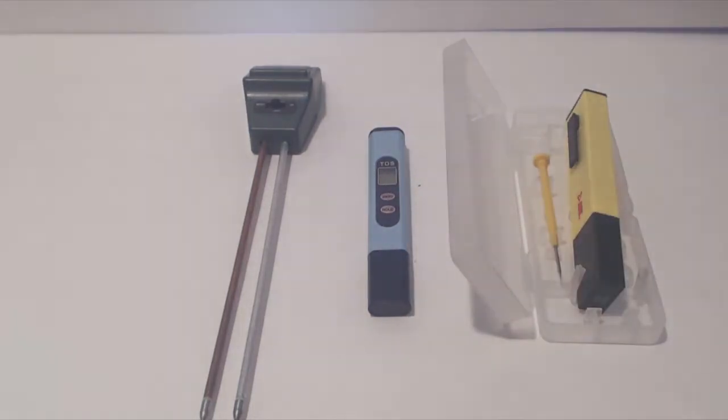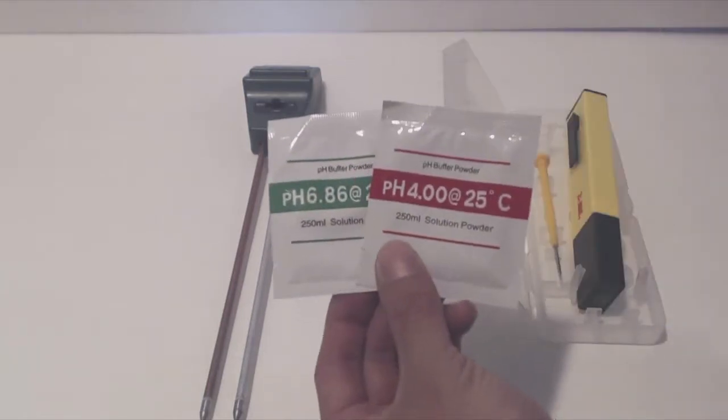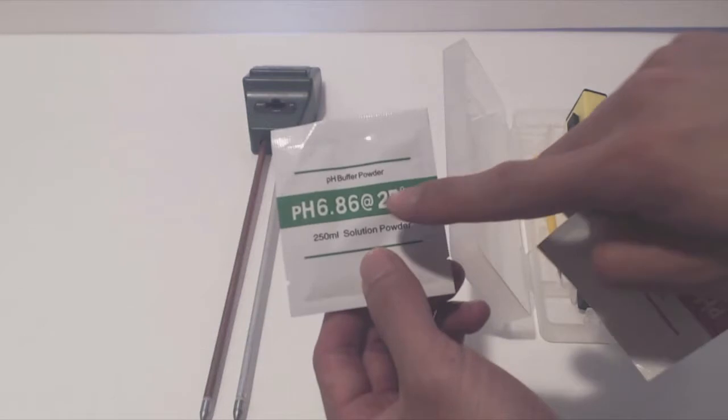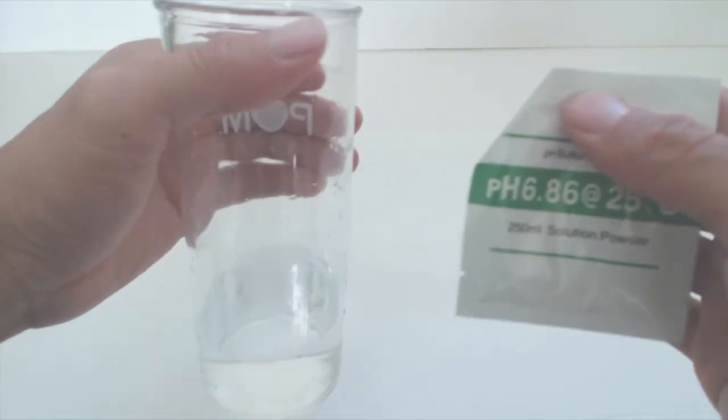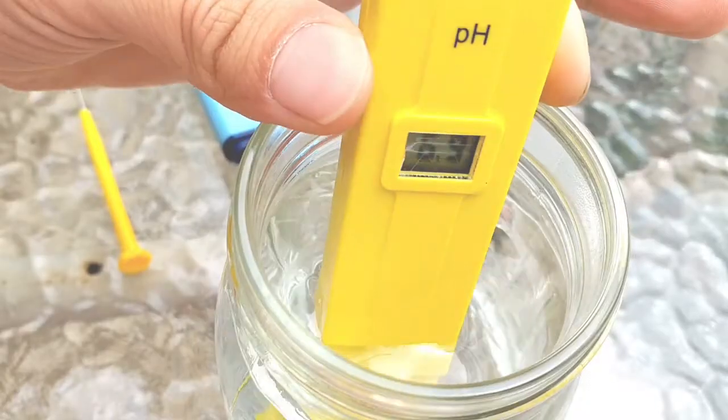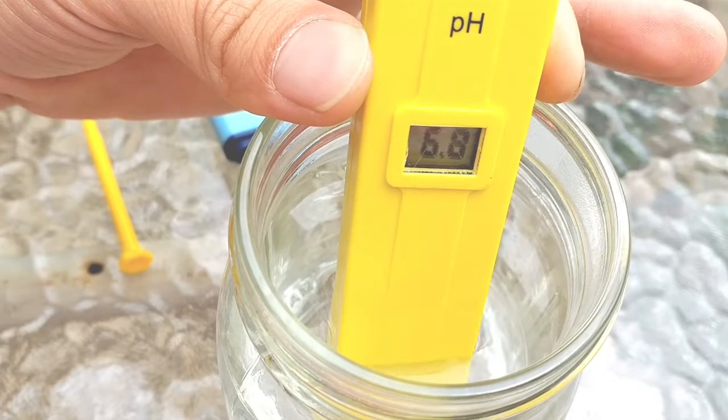The pH meter needs to be calibrated with a buffer solution before first use. These are available at hydroponic stores and online, but are not included with this set. They'll look something like this. What you want to do is mix each packet with water, and then ensure the meter gives you the correct reading when you stick it in the solution.